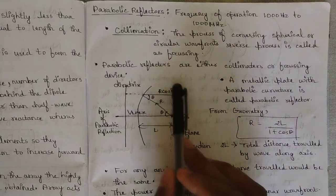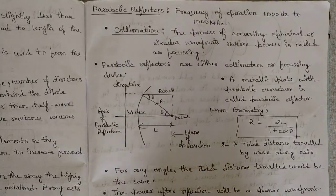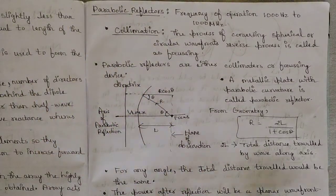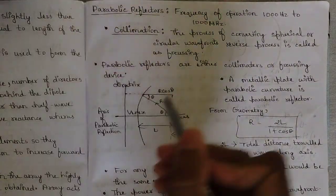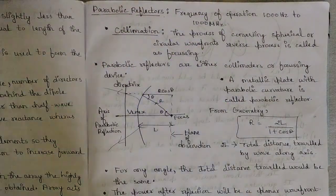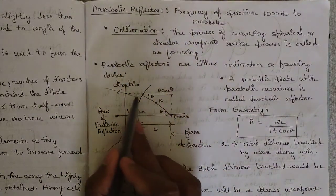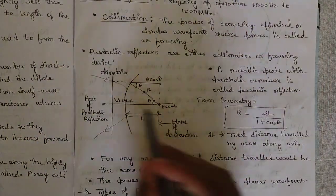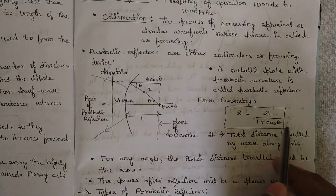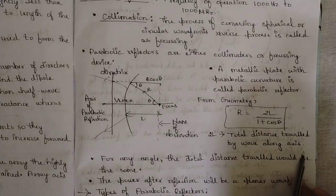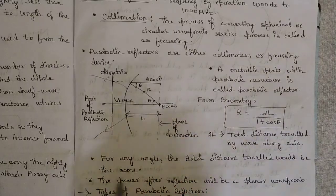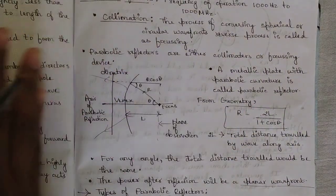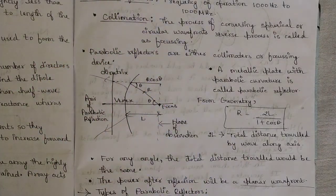A metallic plate with parabolic curvature is called a parabolic reflector. The reflector is drawn with respect to the directrix and focus, showing the complete focal length, vertex, and axis. Rays entering the antenna reflect toward the surface of the antenna. From this geometry, the value of r is given by r = 2l / (1 + cos θ), where 2l is the total distance traveled by the wave along the axis. For any angle, the total distance traveled is the same, and the power after reflection produces a planar wave front.